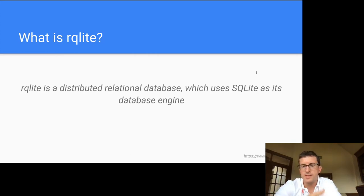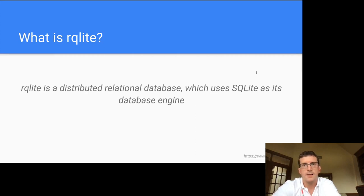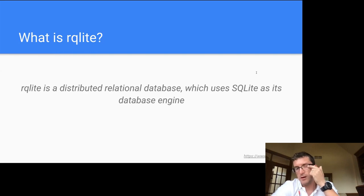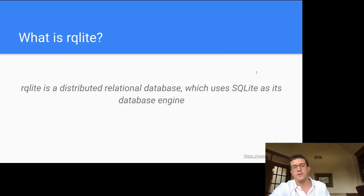RQLite is written in Go, though it statically links the SQLite C source code — not patched or rewritten SQLite, but the actual C source code. It exposes an HTTP API, which means it's not a drop-in replacement for SQLite, but all the power of SQLite is available if you can work with the HTTP API. It's open source, development started in 2015, and the current release is version 6.0.